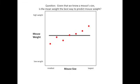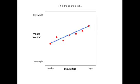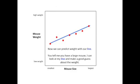Here's a question for you. Given that we know an individual mouse's size, is the mean or average weight the best way to predict that individual mouse's weight? Well, the answer is no. We can do way better. All we have to do is fit a line to the data. Now, we can predict weight with our line. You tell me you have a large mouse, I can look at my line and make a good guess about the weight.